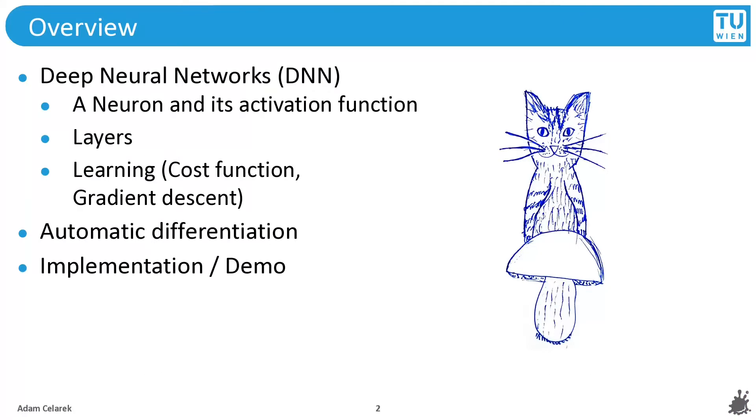Let's go to the overview. We will go only very briefly into deep neural networks, mainly to set the scene for us. Then we will focus on automatic differentiation and how it works, and finally I will show a short Python demo. I've also implemented a C++ neural network that I will link in the description.